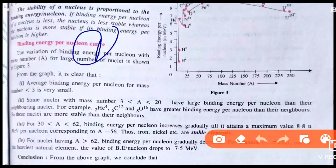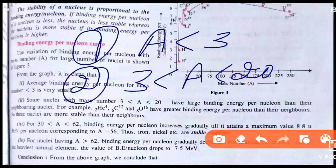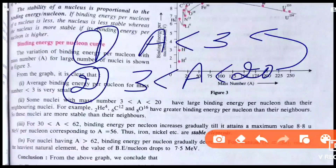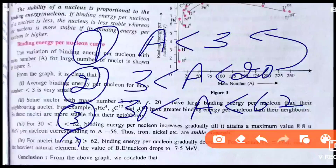So there are just four points to explain from the graph. Point 1: atomic number less than 3, binding energy is small. Point 2: mass number 3 to 20, binding energy is greater than neighbors. Point 3: mass number 30 to 62, iron and nickel are the most stable elements. Point 4: greater than 62, binding energy decreases.